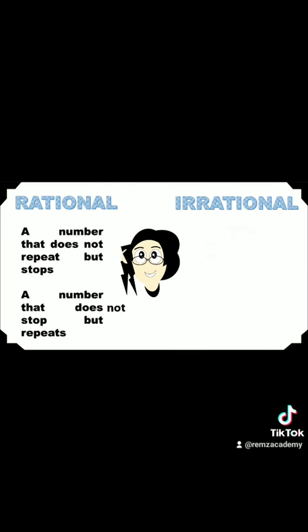Reminders, a rational number is a number that does not repeat but stops, and a number that does not stop but repeats. While an irrational number is a number that does not repeat and does not stop. That's it! Thanks for watching!